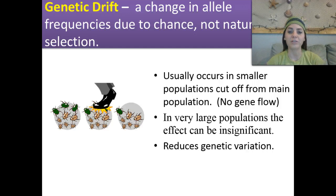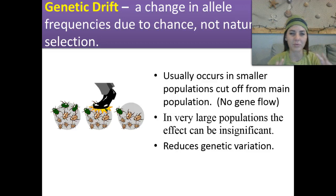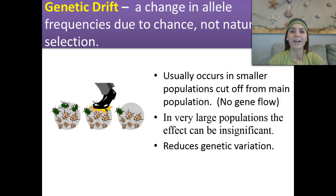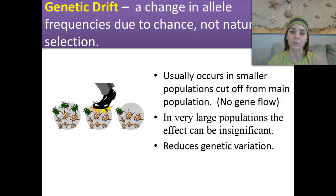Genetic drift usually occurs in smaller populations that have been cut off from the main population, meaning there's no gene flow into or out of that gene pool. It also happens in very large populations, but the effect can be very insignificant. It will reduce genetic variation. For example, we're in a forest with a huge population of bunny rabbits. A tree falls and knocks one rabbit out of a million-rabbit population — that's not going to be a huge deficit. But if we have a population of only 10 rabbits and a tree falls and knocks out one rabbit, that is going to be a significant change because the population was much smaller to begin with.